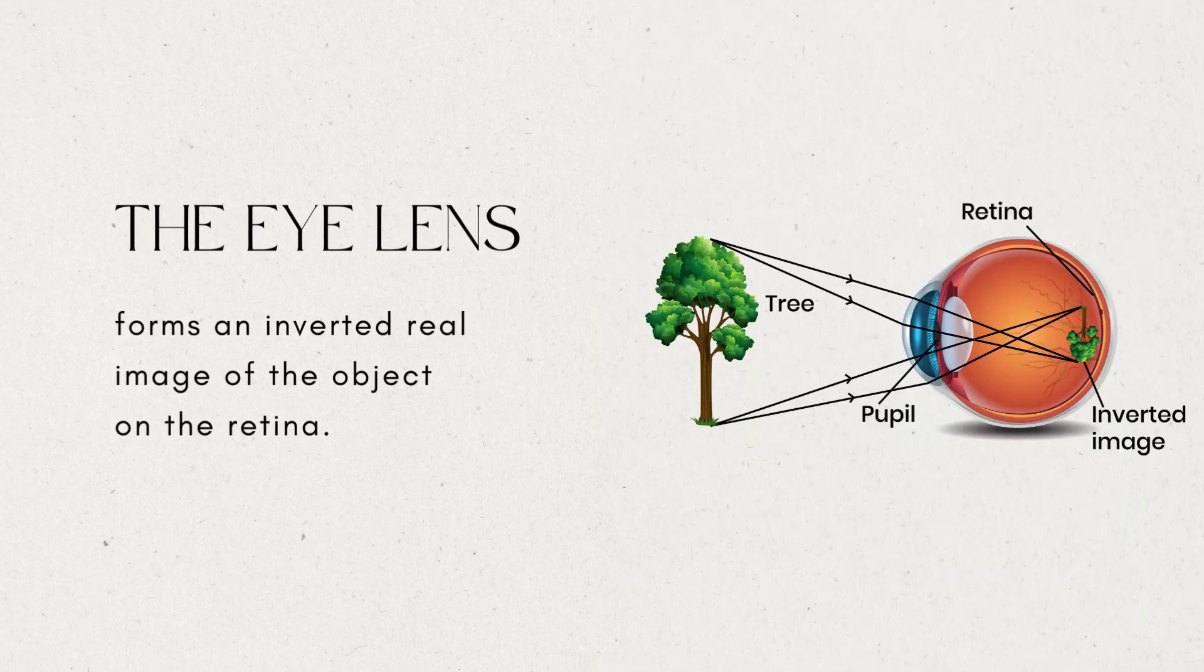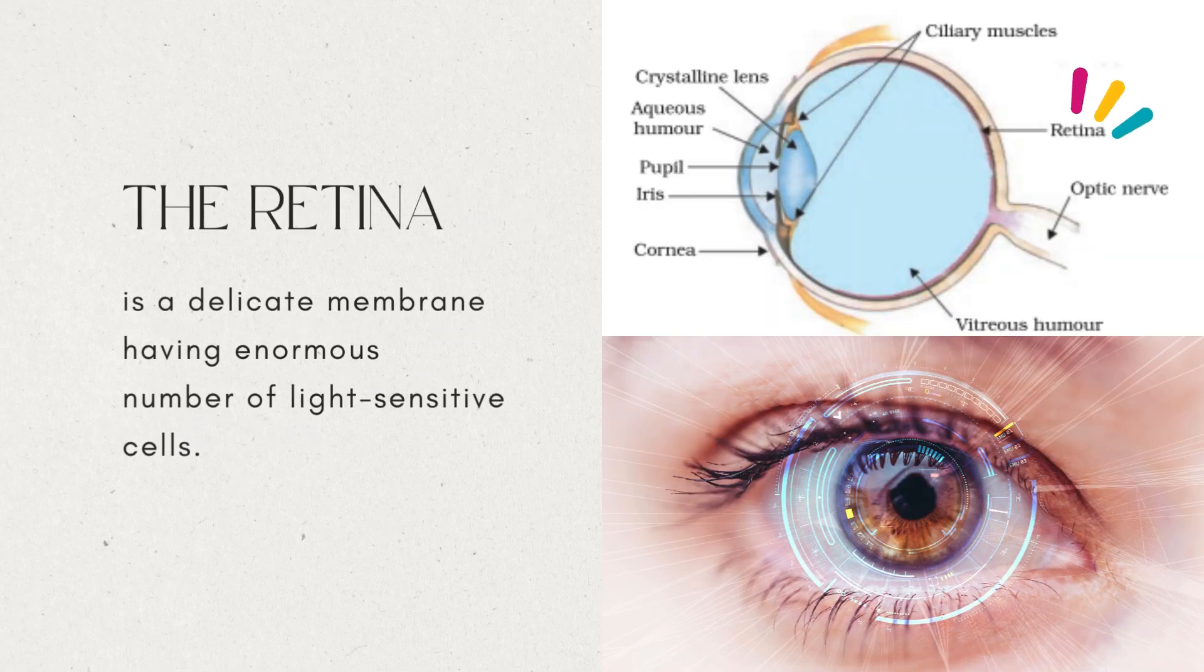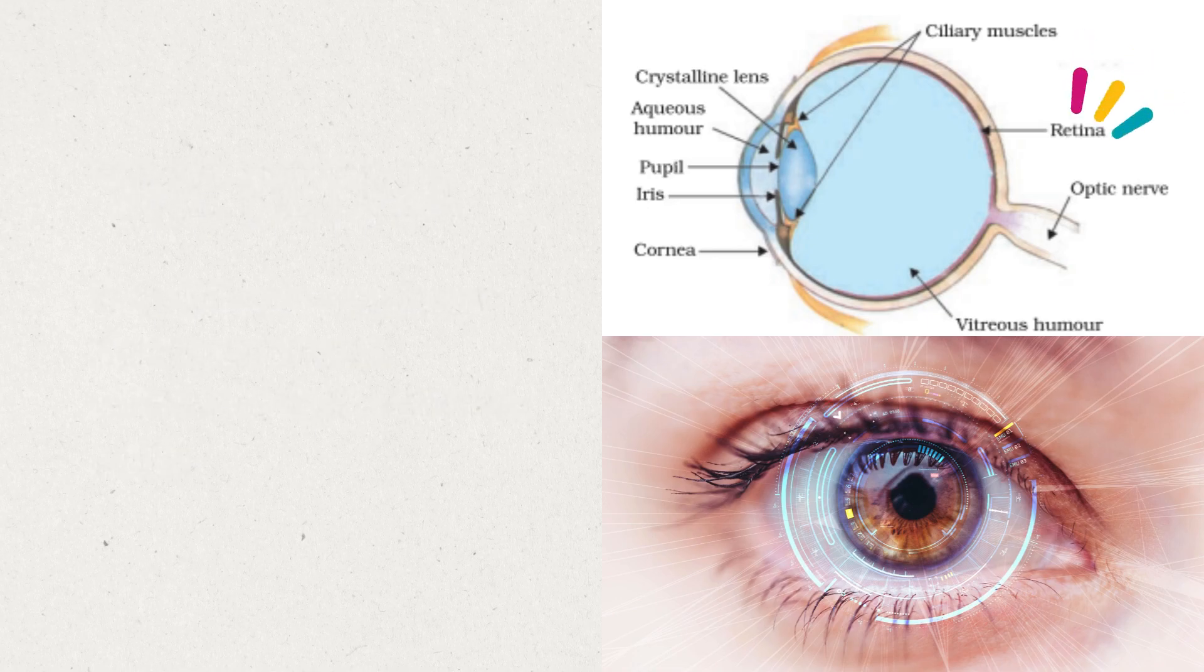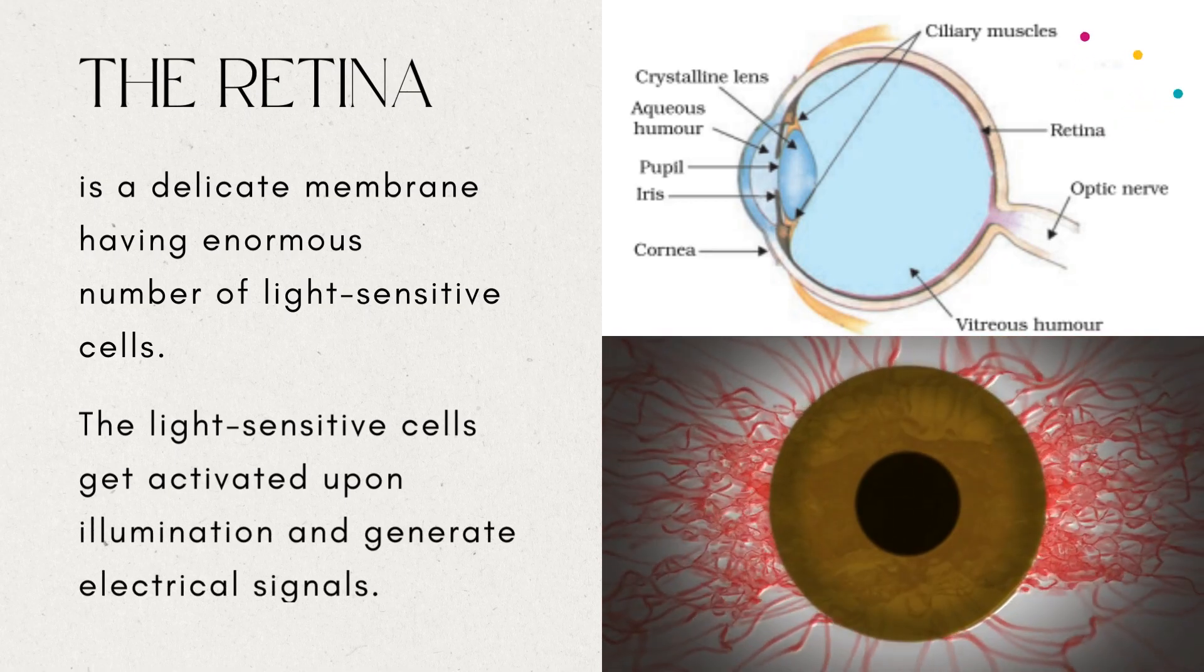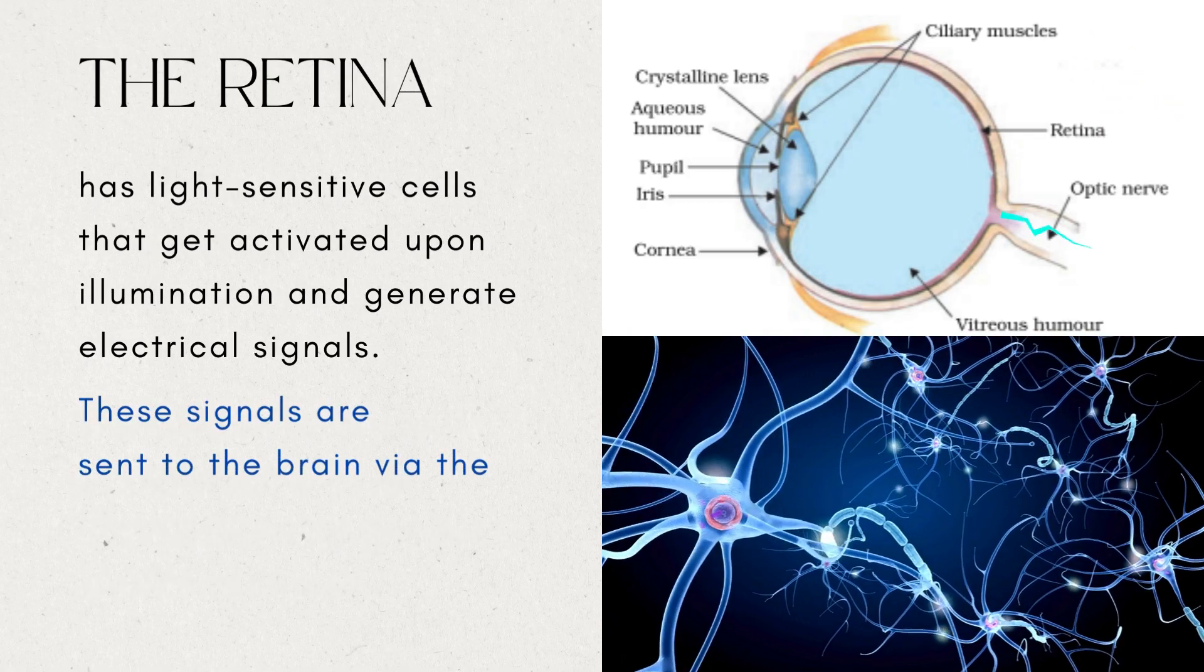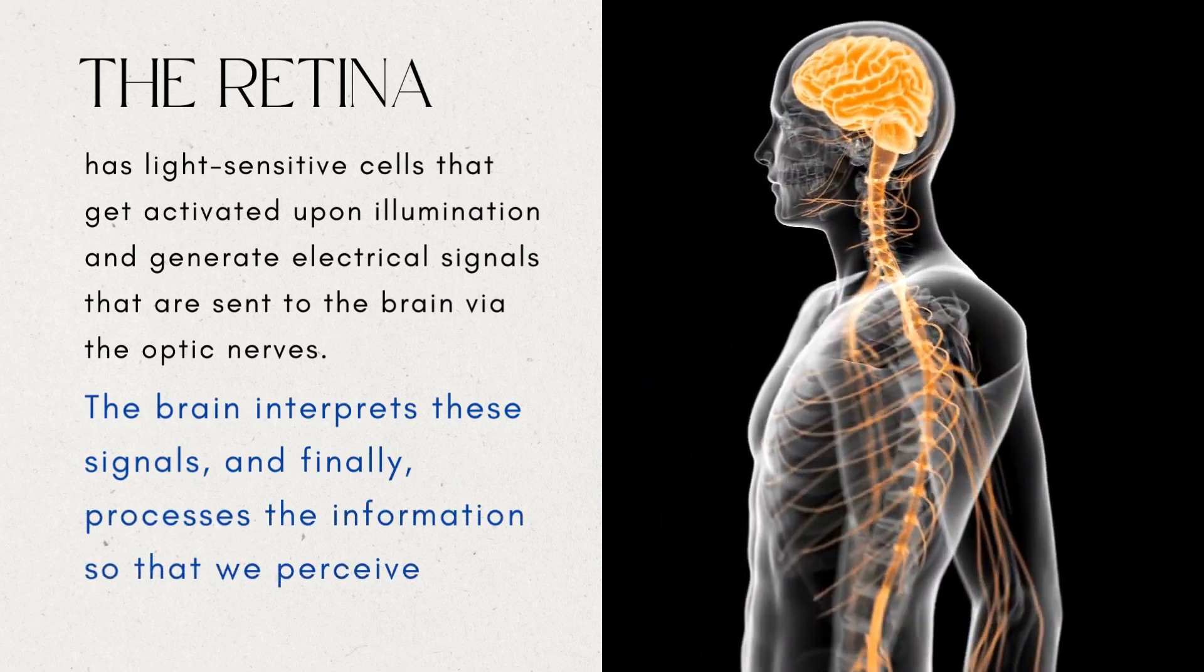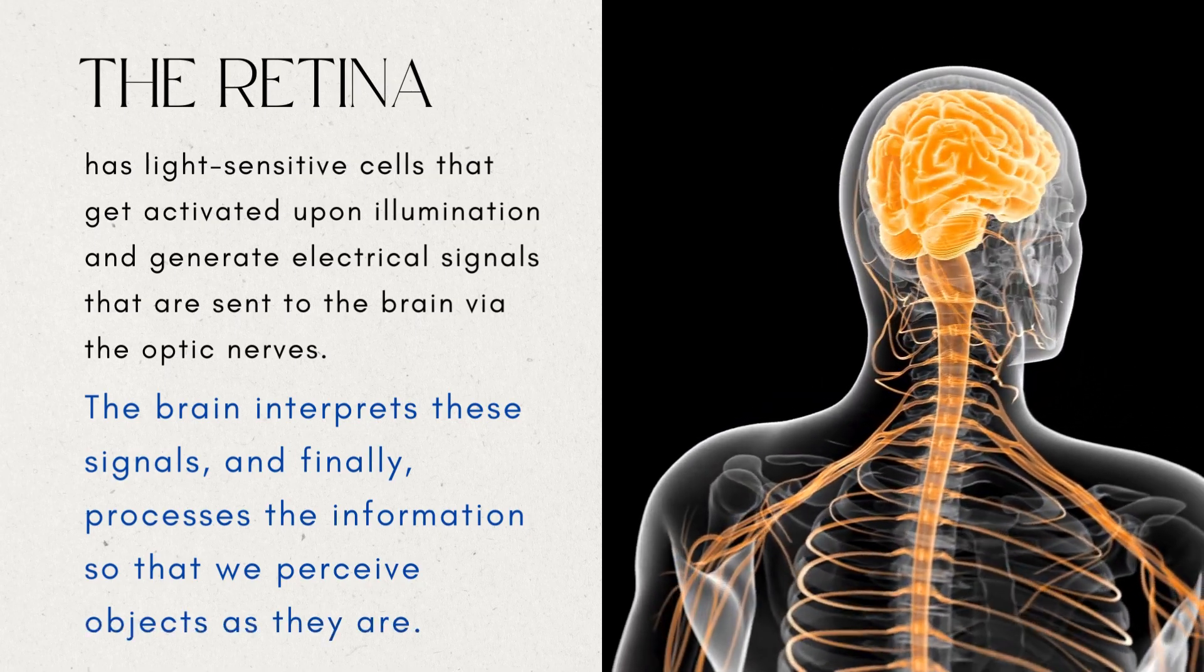The eye lens forms an inverted real image of the object on the retina. The retina is a delicate membrane having an enormous number of light-sensitive cells. The light-sensitive cells get activated upon illumination and generate electrical signals. These signals are sent to the brain via the optic nerves. The brain interprets these signals and finally processes the information so that we perceive objects as they are.